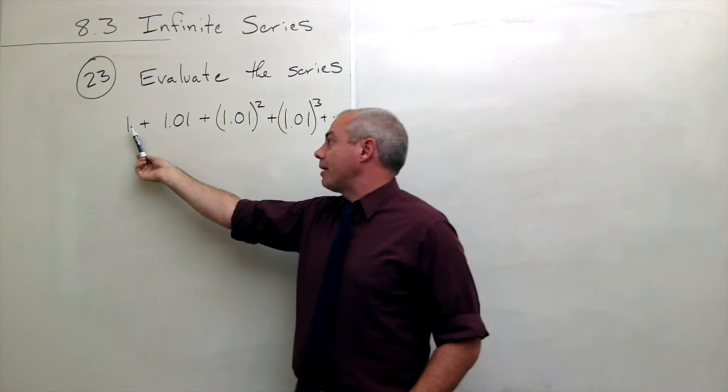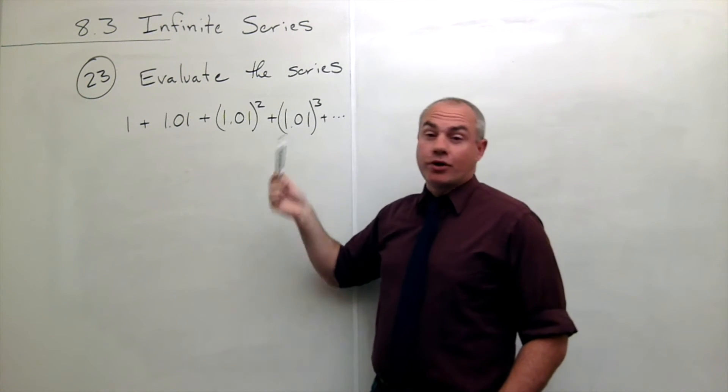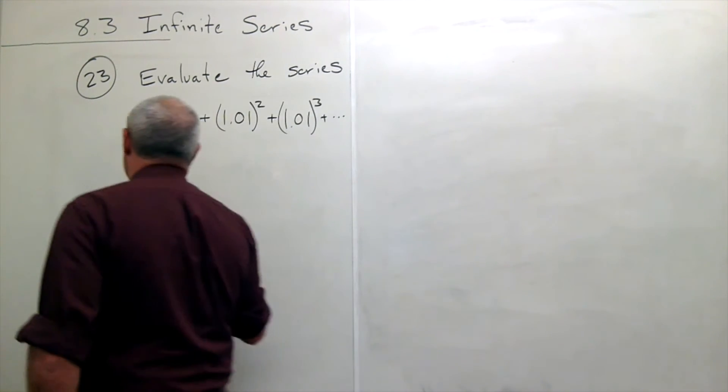In this case I multiply by 1.01, again I multiply by 1.01, multiply by 1.01. So we just keep on multiplying by 1.01. So this is a geometric series.